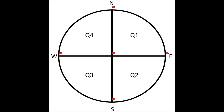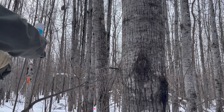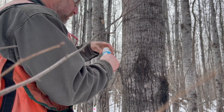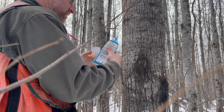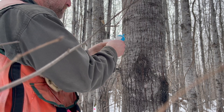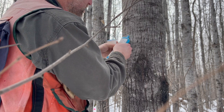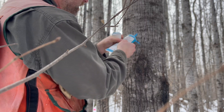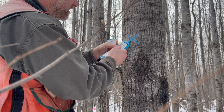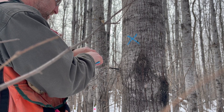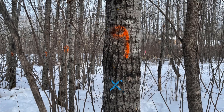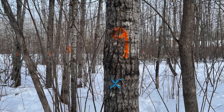Within each quadrant, we also want to record a witness tree. The witness tree should be the best formed, longest lived, dominant tree within each quadrant. Take your time and mark these trees with special paint so that they can be identified at a later date when people are doing QA/QC. These trees also receive special measurements including distance and azimuth from the plot center.